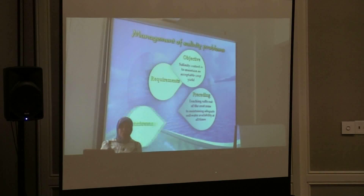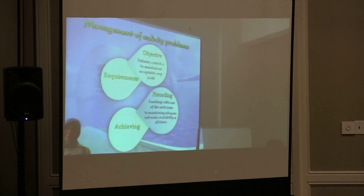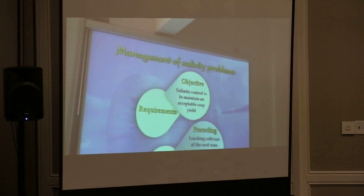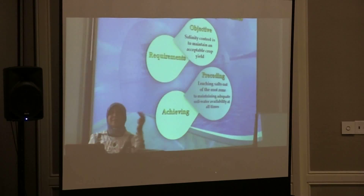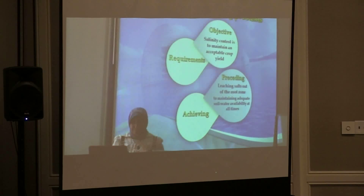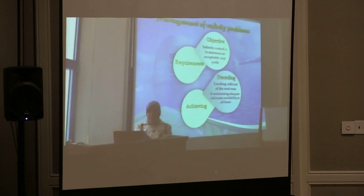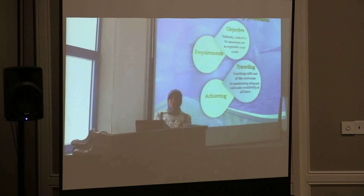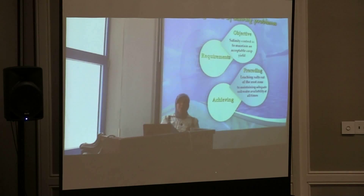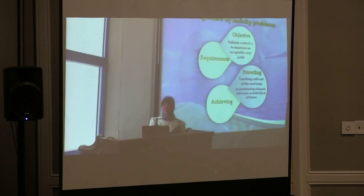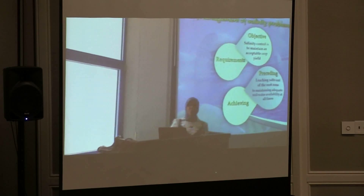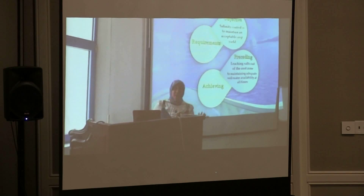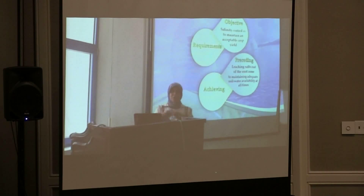The next point is very important to discuss — it is called management of salinity problems. We have to manage this problem by four items: objective, proceedings, monitoring, and achieving. Our objective is salinity control, to maintain and accept permissible levels, using procedures of leaching road salt from land roads, and monitoring requirements of time, salinity of water, salinity of soil, and any other parameters to calculate the salinity of both soil and water.